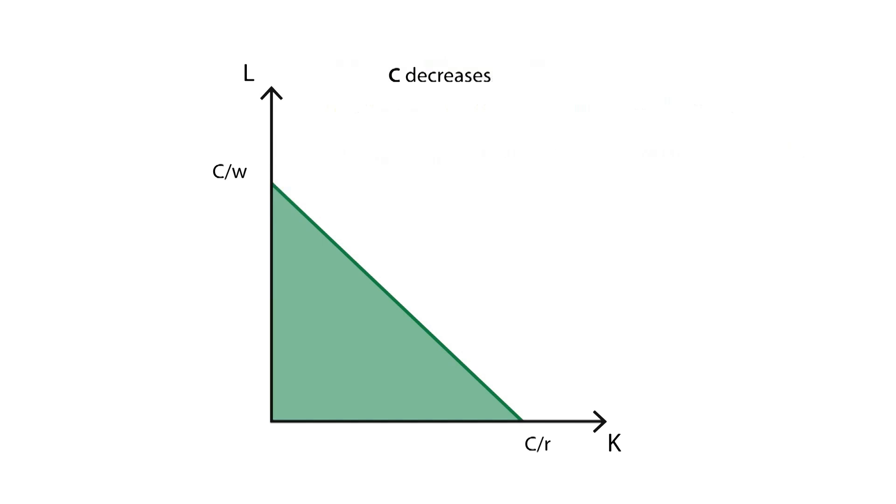In the case where the amount of money available decreases, the line will be shortened and the area reduced. This will give the firm less possible combinations of inputs.